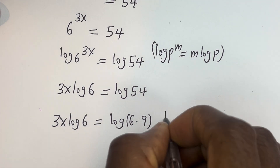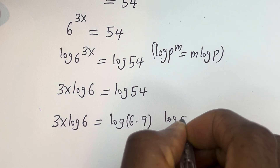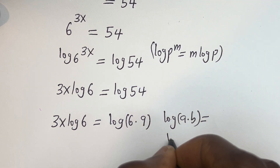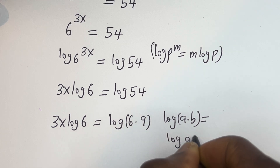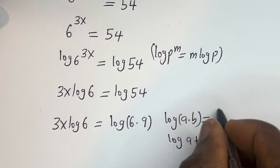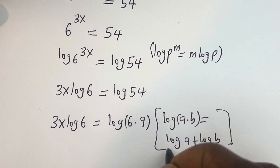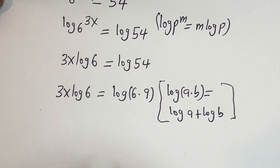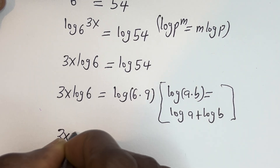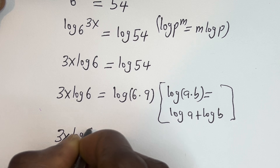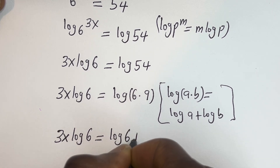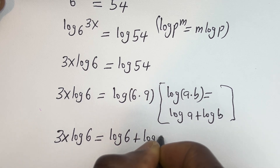Take note that if you have log of a multiplied by b, this is equal to log a plus log b. Then this can be written as 3x log 6 is equal to log 6 plus log 9.